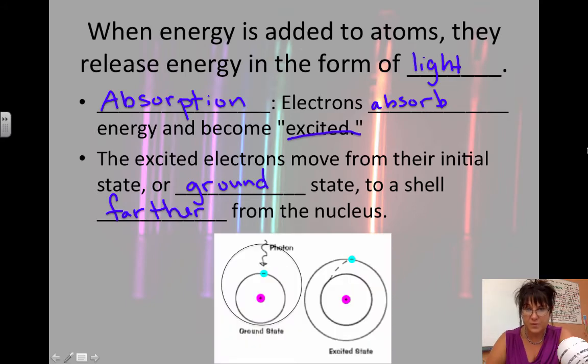So an absorption is where your electron in its normal energy level gets bombarded by a photon of light and it transfers the energy to the electron, so the electron moves to an energy level that is farther away from the nucleus.